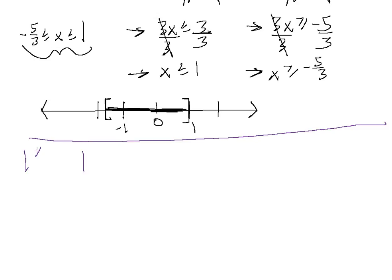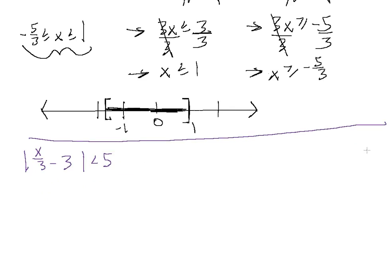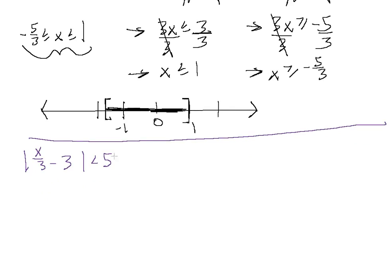Let's take a look at the absolute value of x divided by 3 minus 3, which is less than 5. We have another less than inequality, which means we're going to have another AND compound inequality. So let's split it up: we have x over 3 minus 3 less than 5, and x over 3 minus 3 greater than negative 5. Both of these are within 5 steps of 0 — talking about distance when we're referring to absolute value.